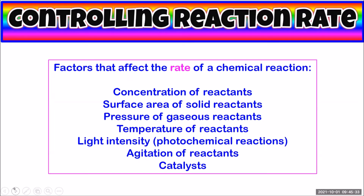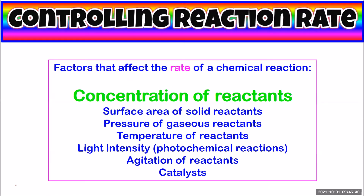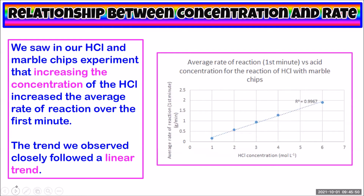There are many factors that influence the rate of a chemical reaction. Today we're going to focus on the concentration of reactants. In our previous video, we performed an experiment to investigate the effect of concentration of reactants on reaction rate. We did a reaction of marble chips with hydrochloric acid, and we measured the mass of carbon dioxide produced at various time intervals. Then we changed the concentration of the hydrochloric acid. I've calculated the reaction rate over the first minute for each acid concentration and graphed the results. You can see that the increased concentration of the hydrochloric acid increased the average rate of reaction over that first minute, and the trend we observed was pretty close to a linear trend.